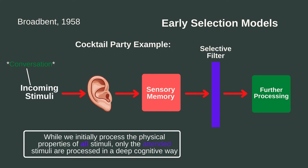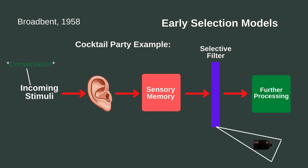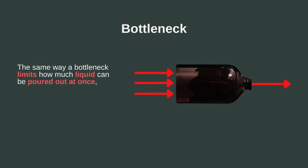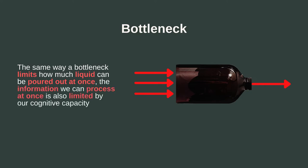Thus, while we initially process the physical characteristics of everything we hear at the party, only the conversation we're paying attention to is eventually processed in any sort of deep cognitive way. In this sense, the theory can be illustrated by a bottleneck. In the same way that a bottleneck will limit the amount of liquid that can be poured out at once, the information that we can fully process at once will also be limited by our cognitive capacity. Most of the available information will be filtered out and lost.